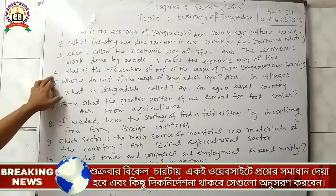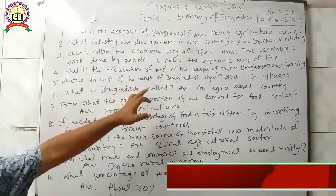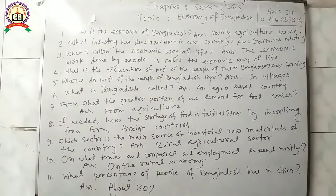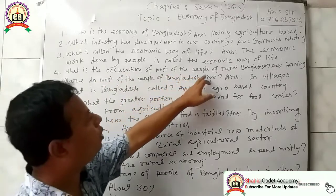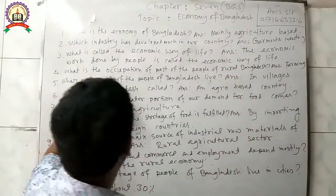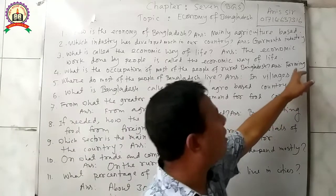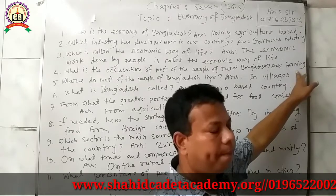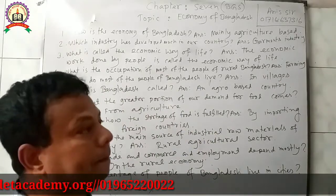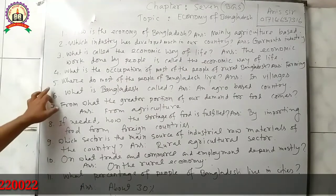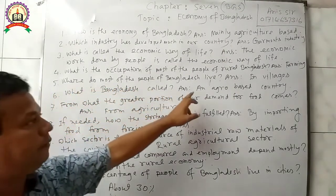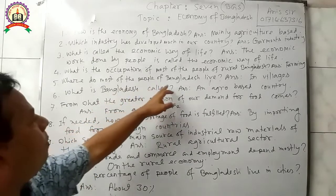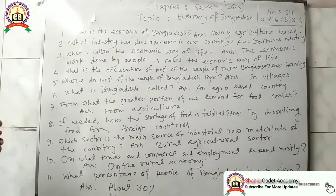Question 4: What is the occupation of most of the people of rural Bangladesh? Answer: The occupation of most of the people of Bangladesh is farming or agriculture. Question 5: Where do most of the people of Bangladesh live? Answer: Most of the people of Bangladesh live in villages.